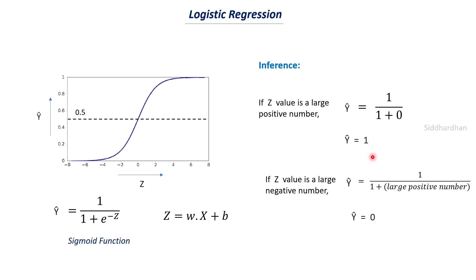This is how the logistic regression model predicts y-hat values lying between 0 and 1 using the sigmoid function, where z = wx + b. In the next video I will explain the loss function of a logistic regression model and how to use it to derive gradient descent for logistic regression — which is slightly different from the linear regression case. After that we will move on to building a logistic regression model from scratch in Python. I hope you understood everything covered in this video, and I will see you in the next upload. Thanks for watching.